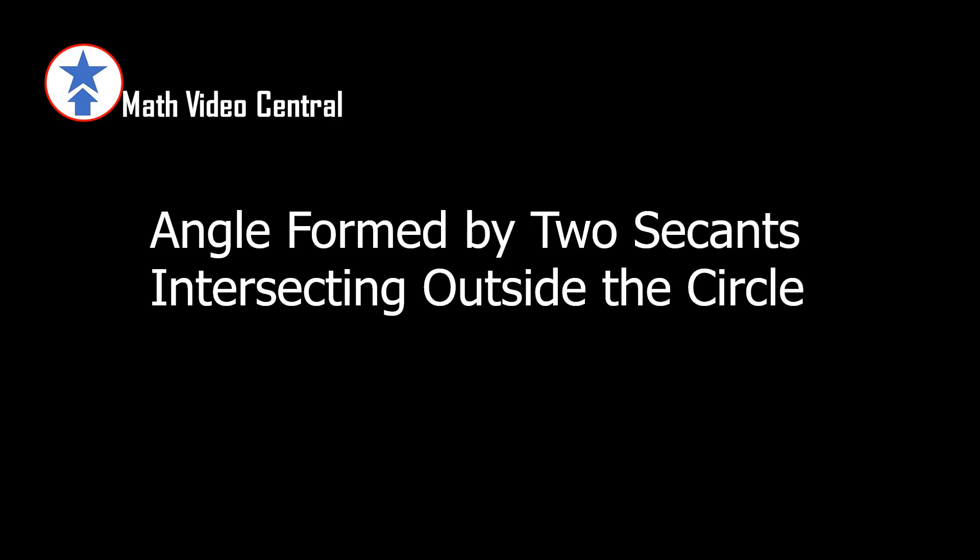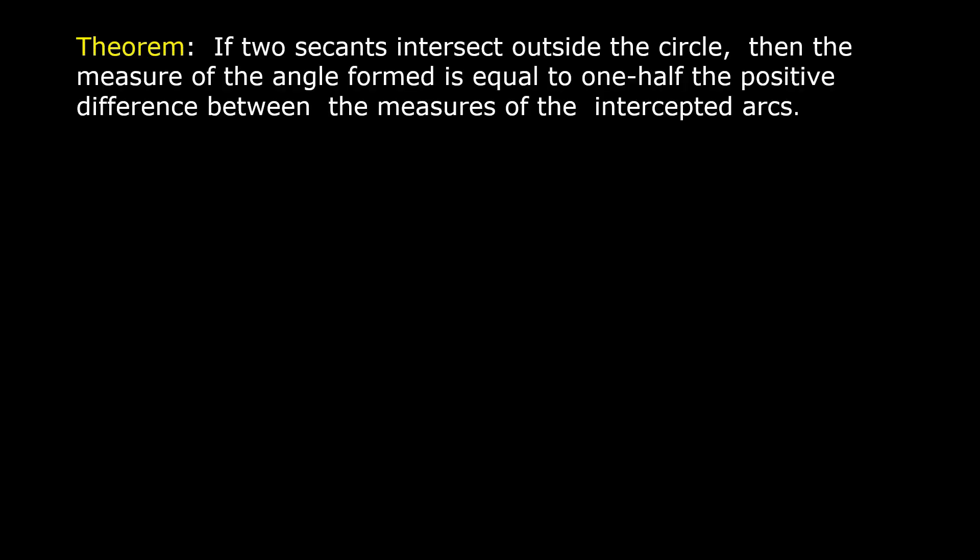In this lesson, we are going to solve a problem involving an angle formed by two secants intersecting outside the circle. Let us read first this theorem: if two secants intersect outside the circle, then the measure of the angle formed is equal to one-half the positive difference between the measures of the intercepted arcs.